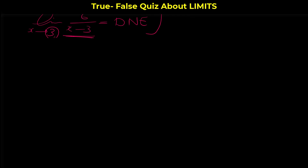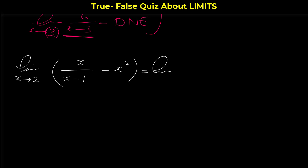Now compare this example with this one: the limit as x approaches 2 of (x/(x-1) - x²) can be written as the limit of x/(x-1) minus the limit of x² as x approaches 2. Is this statement true or not?